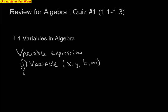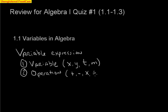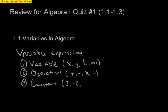Number two, it's got to have an operation — your simple addition, subtraction, multiplication, division. And then lastly, number three, it's got to have a constant. A constant is just a fancy term for a number — three, negative two, six, ten, and so on.